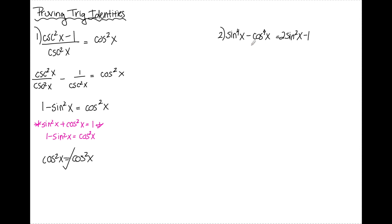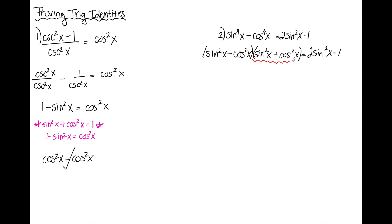The left side looks more complex than the right-hand side. I'm noticing that sine to the fourth minus cosine to the fourth is actually a difference of two squares. So I can factor that as sine squared x minus cosine squared x times sine squared x plus cosine squared x, and that's still equal to 2 sine squared x minus 1.